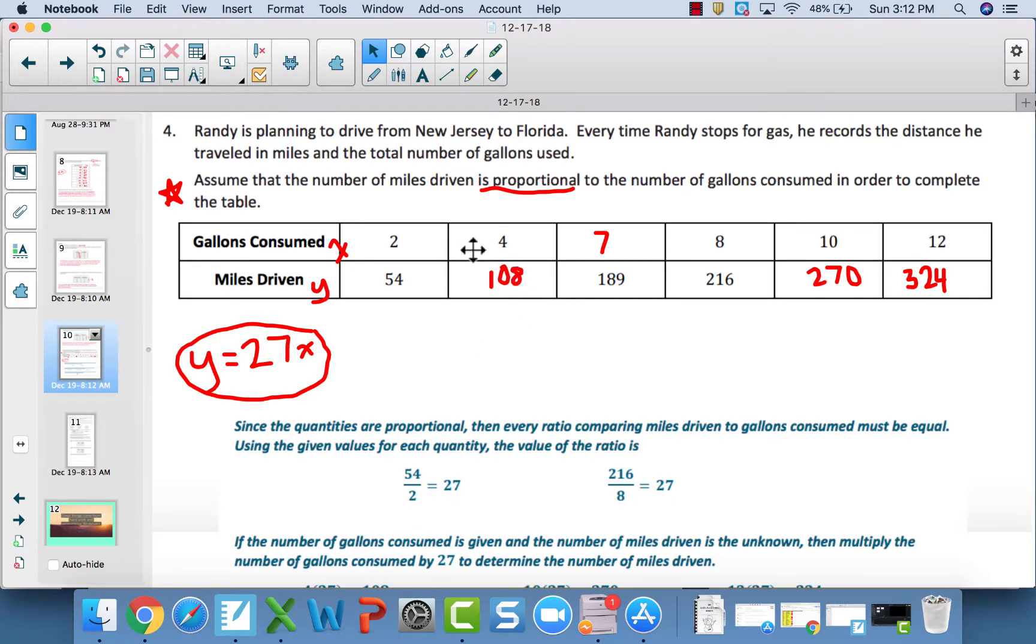Looking at our table, underneath 4 gallons consumed, you should have got 108 miles. Above 189 miles, you should have got 7 gallons. And below 10 gallons, you should have got 270 miles. And with 12 gallons, you should have got 324 miles. Our equation here, our multiplicative number is 27. That is our constant of proportionality, our unit rate, our scale factor. We are multiplying x times 27 to get y. Notice I labeled y and x here.